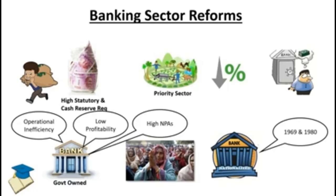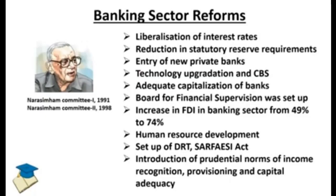The Narasimham Committee 1 (1991) and Narasimham Committee 2 (1998) were the starting points of the banking sector reforms. Under these reforms, interest rates were liberalized — made lower so that funds would be cheaper and invested in businesses. Statutory reserve requirements were also reduced. Private banks came into the economy, technology application was done, and core banking solutions were implemented to make banking transactions faster.